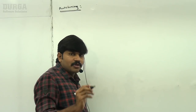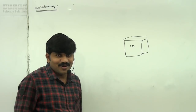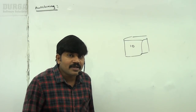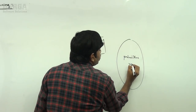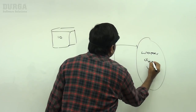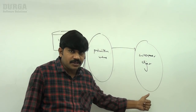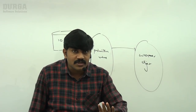Now what is auto boxing? Auto boxing means: I have a primitive value, and I want to place it inside a box — that is, convert it to a wrapper object. This automatic conversion from primitive to wrapper object, done by the compiler, is called auto boxing. The reverse — removing from the box — is called auto unboxing.